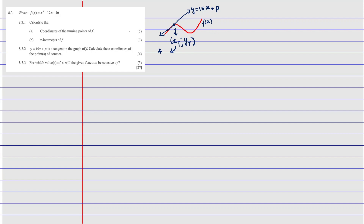We need to understand the relationship between the tangent formula and f(x). We're given y = 15x + p, so 15 is the gradient. The gradient of the graph equals f'(x_t) at the point of contact. Since f'(x_t) equals the gradient of the tangent, f'(x_t) = 15. So all we're going to do is find the first derivative and equate it to 15.